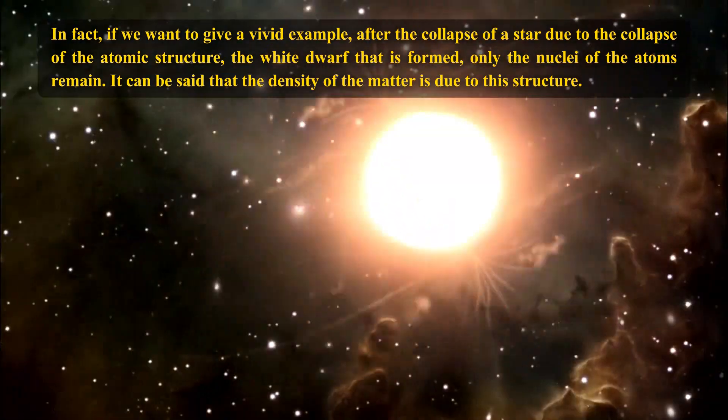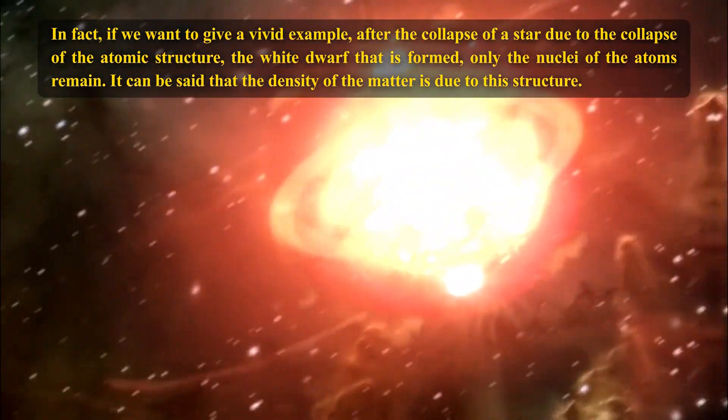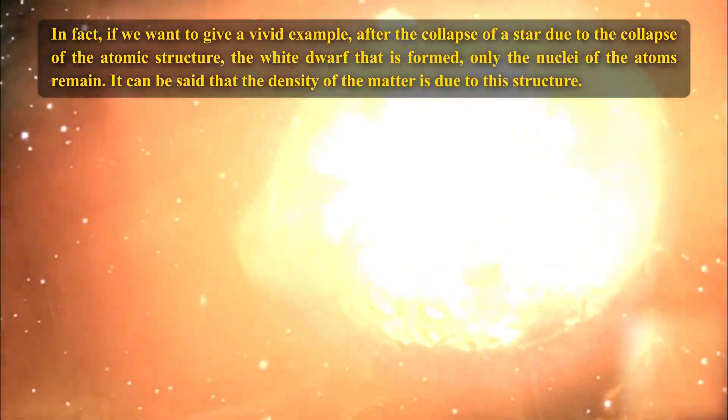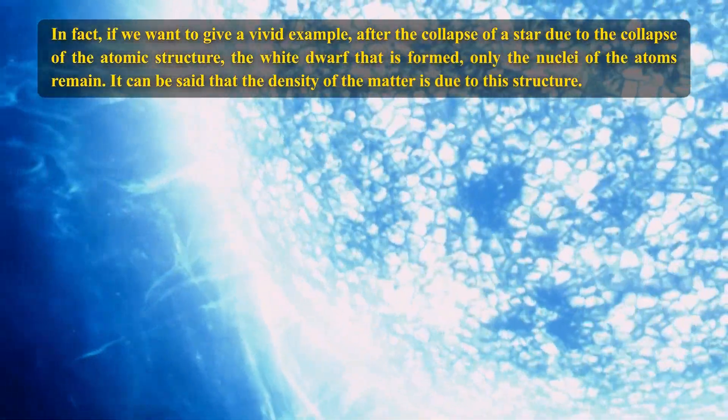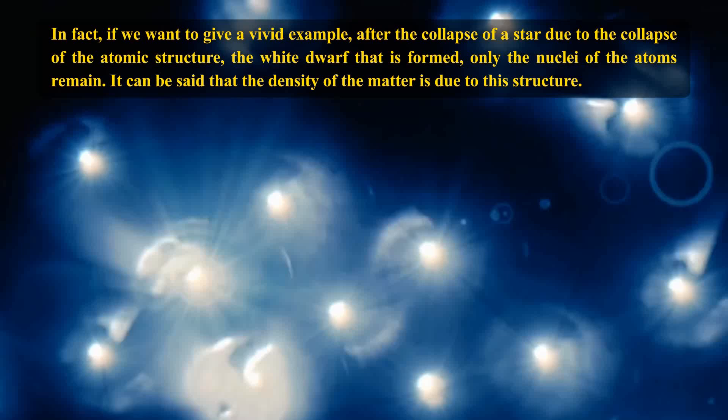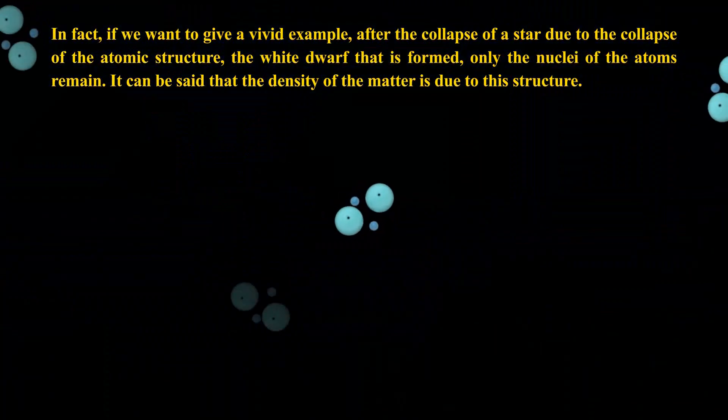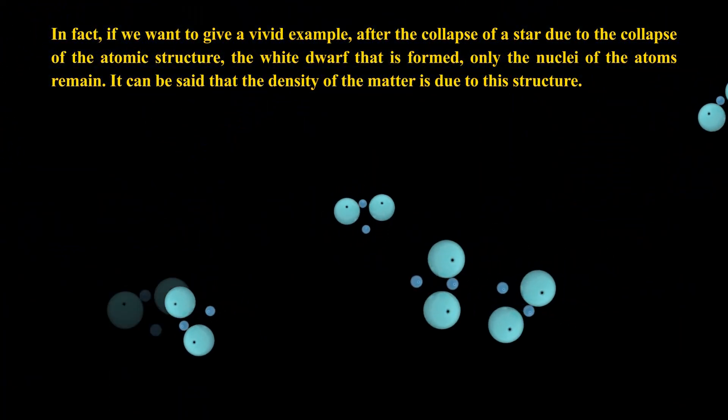If we want to give a vivid example, after the collapse of a star due to the collapse of the atomic structure, the white dwarf that is formed, only the nuclei of the atoms remain. It can be said that the density of the matter is due to this structure.